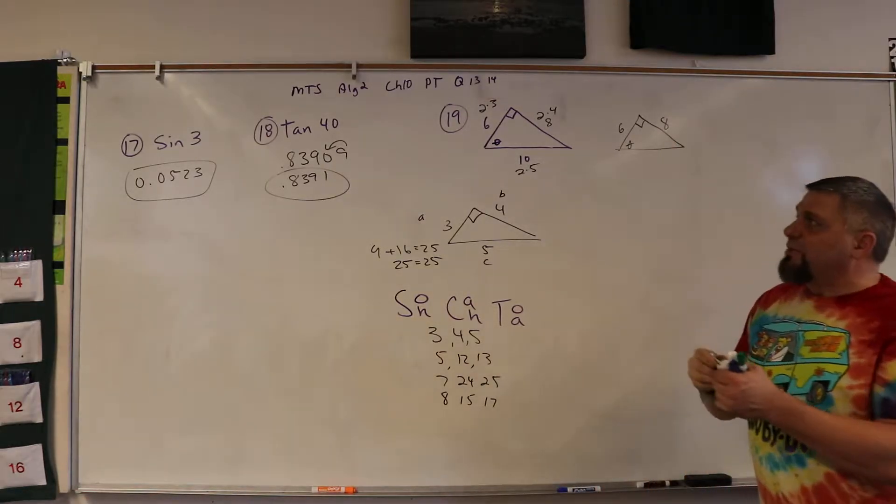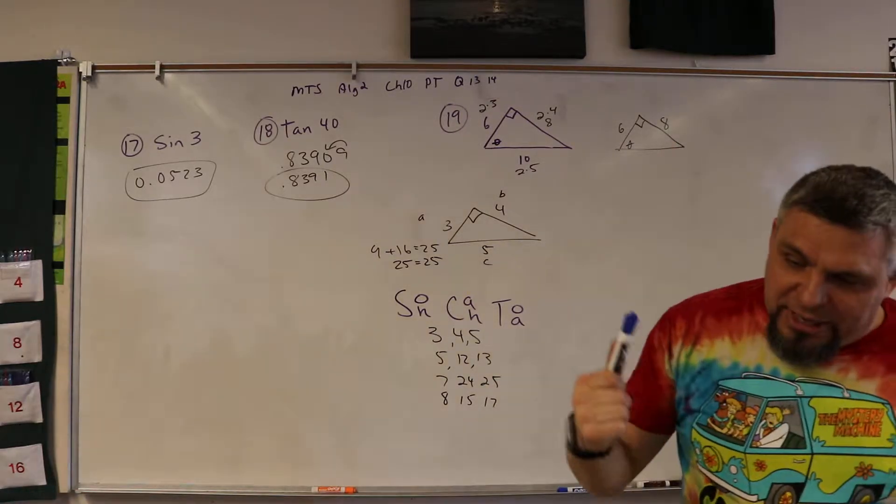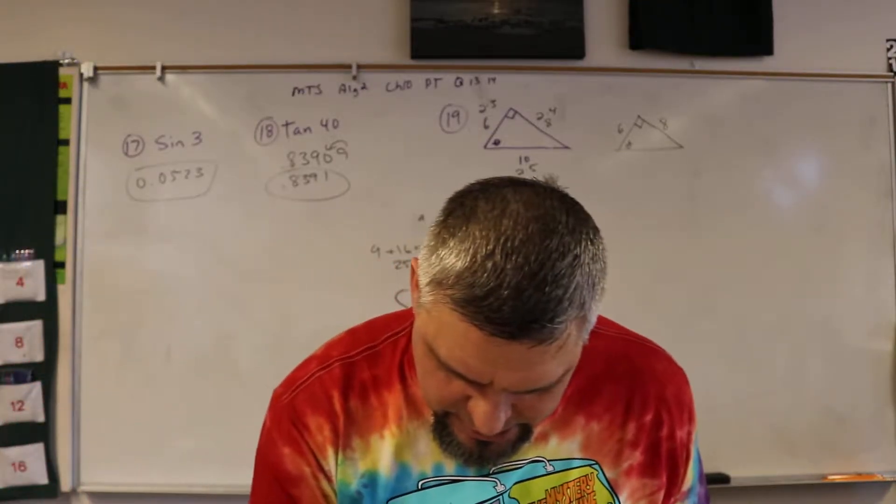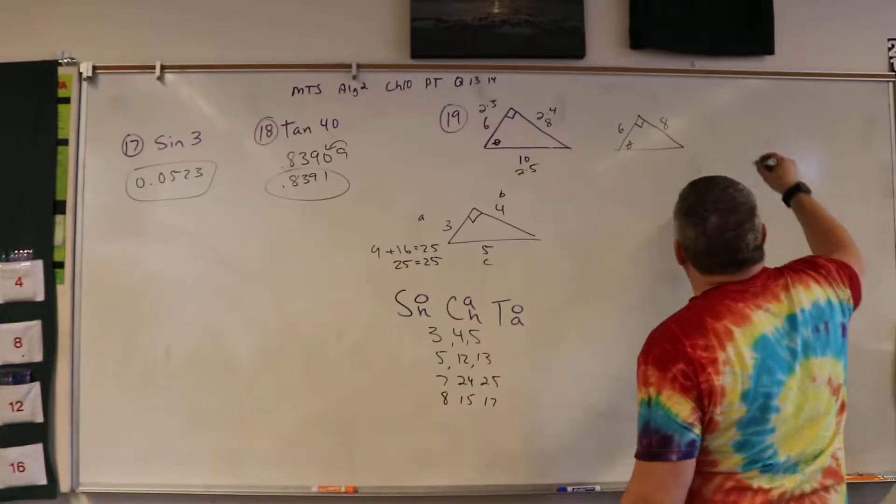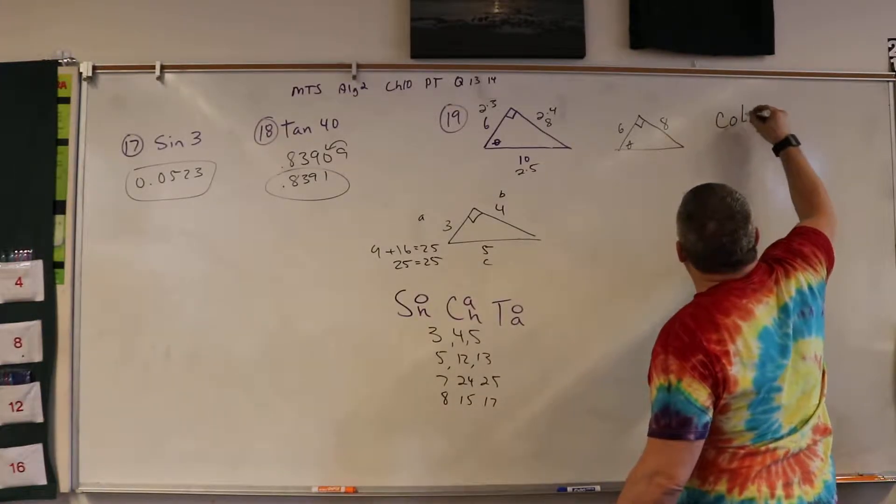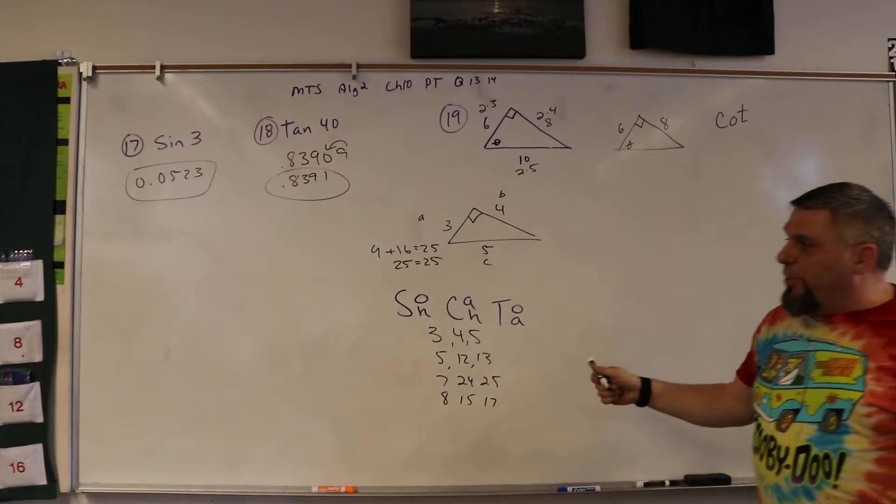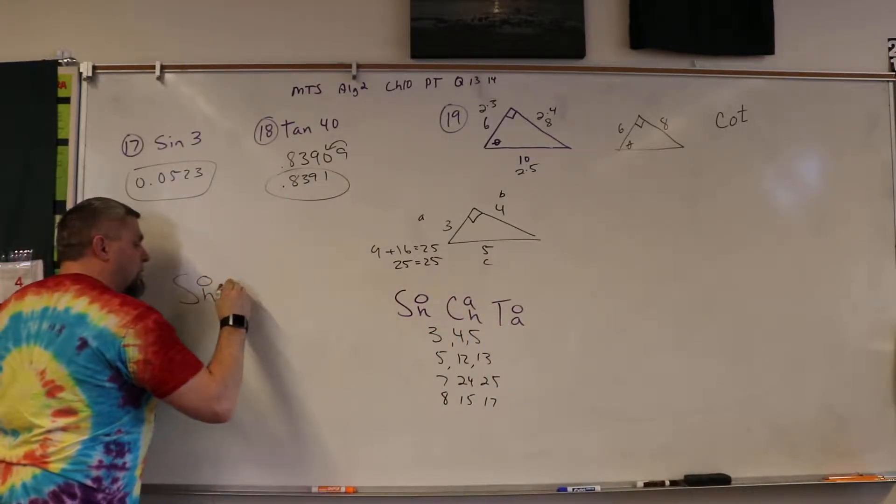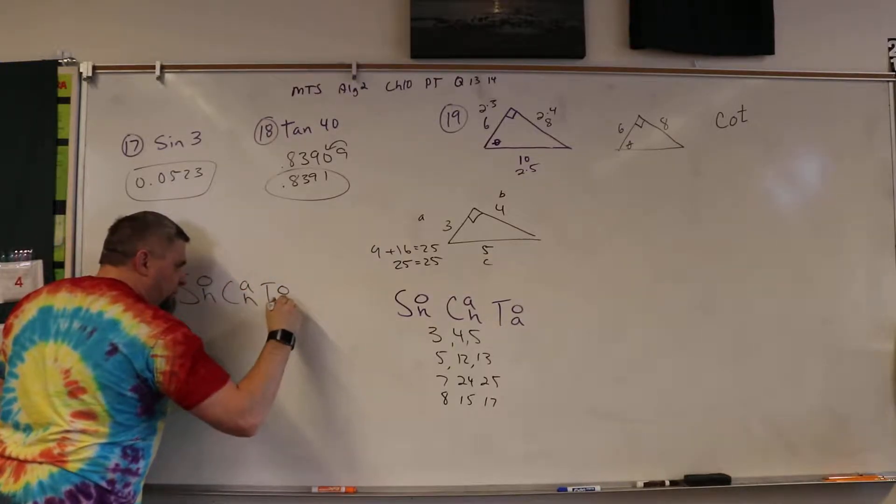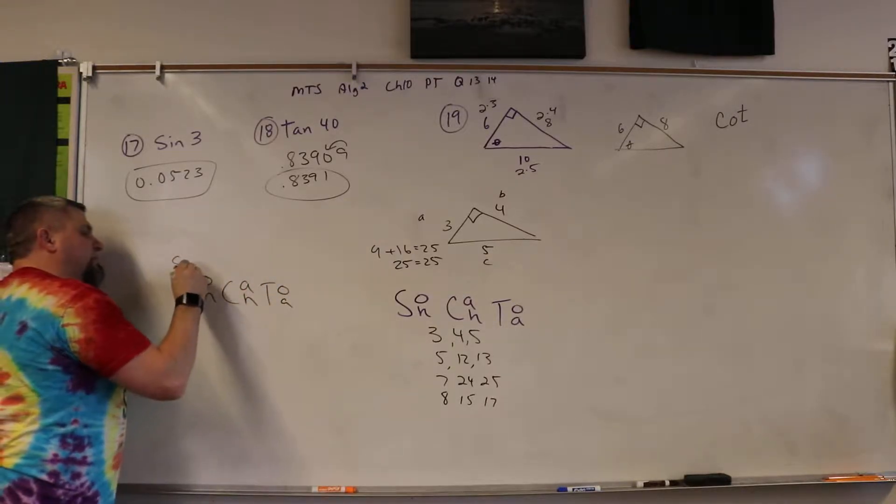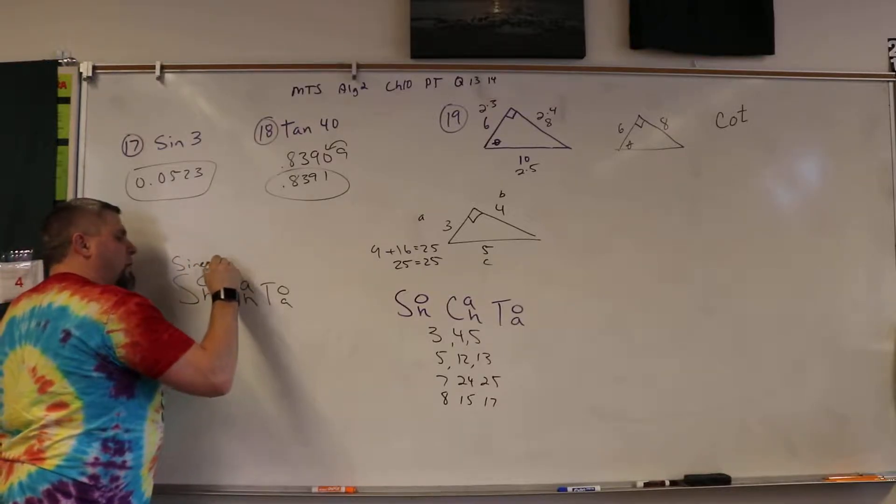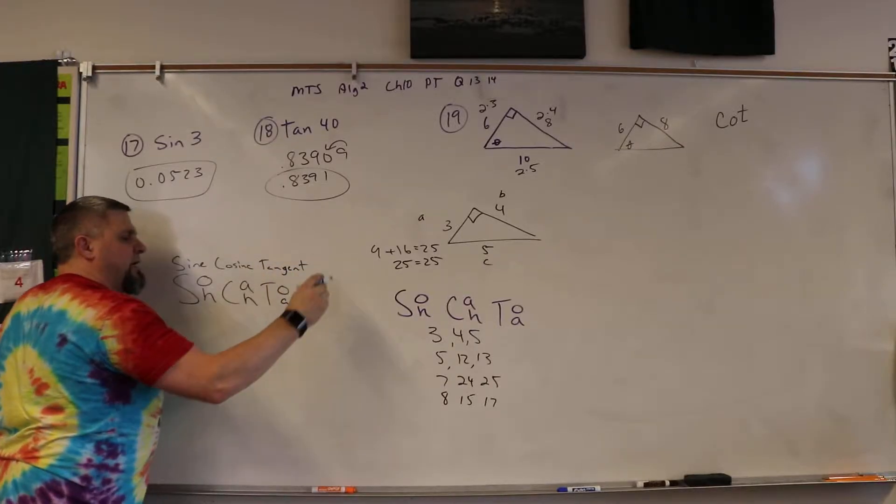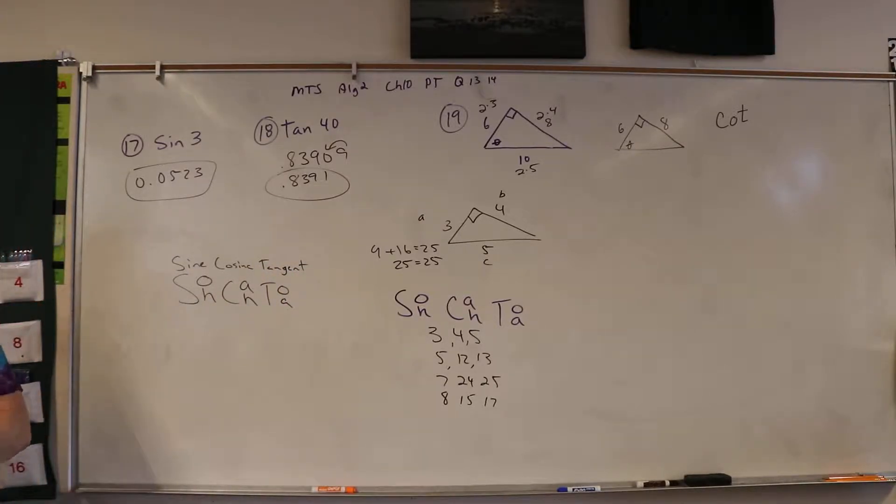Now beta is here and the reason why I did that is because number 19 wants me to do cotangent. So number 19 wants you to do a cotangent. Now we got to remember back when we learned SOH CAH TOA, that this was sine, cosine, tangent. Right?